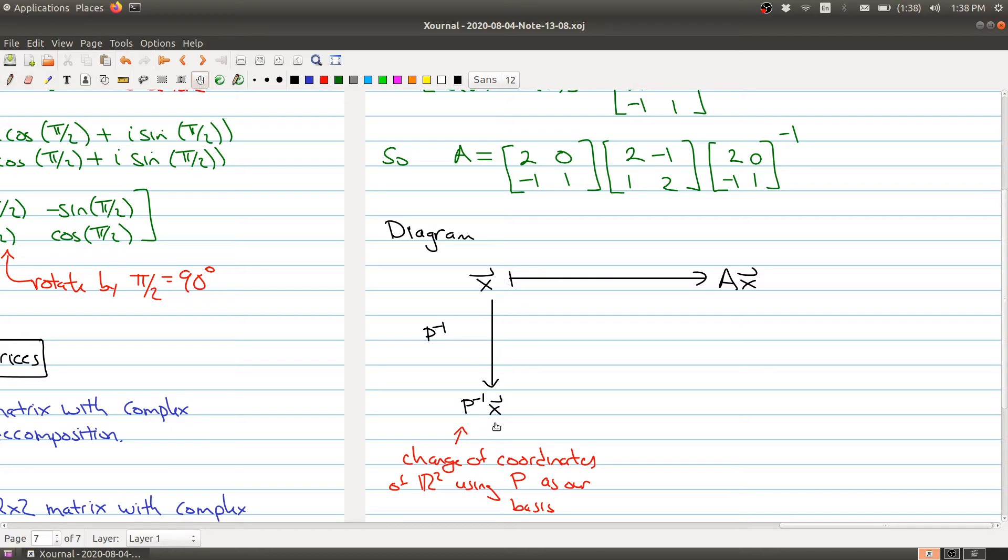You're taking x and mapping it down to this vector and then you're going to multiply it by the matrix in the middle: 2 minus 1, 1, 2. What's happening across this line here is you're doing a rotation. Then you end up with this matrix right over here. So 2 minus 1, 1, 2, P inverse x. Then you're ending up back over here by multiplying it again by the matrix P.